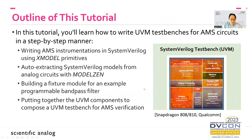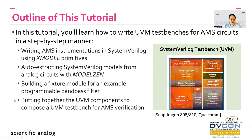Here is the tutorial outline. In part one, we'll start with a brief introduction to XModel and go through exercises on writing AMS instrumentation using XModel primitives. We'll learn how to use ModelZen to auto-extract a SystemVerilog model from existing analog circuits. With these two components we can complete a fixture module, demonstrated with a bandpass filter example. In part two, we'll learn how to put together UVM components — sequencer, driver, monitor, and scoreboard — to compose a UVM test bench that performs various analog simulations on this fixture.